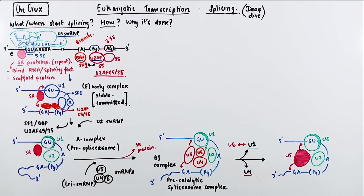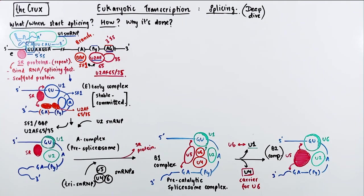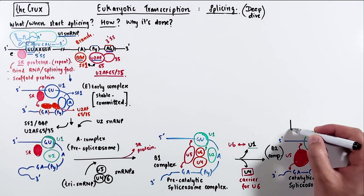So in this transition, U4 is released and U6 replaces U1. A side note is that U4 actually only functions to carry around U6, just like TF2F carries around RNA polymerase 2. So this new complex that we have just drawn out is called the B2 complex,